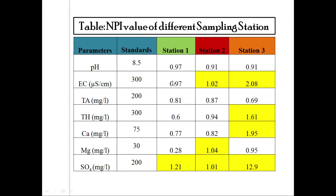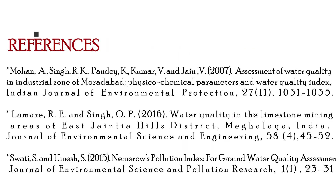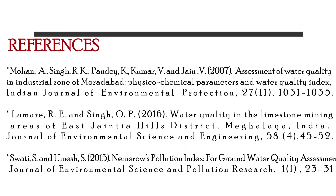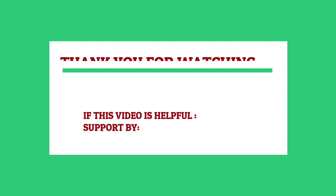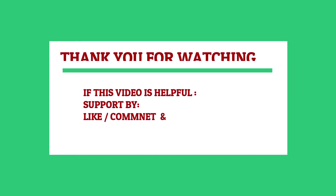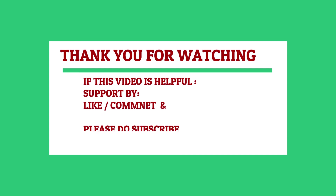With this we can conclude that the Numerous Pollution Index value helps us in identifying which parameters are responsible for polluting or deteriorating the water quality of any area studied. These are the references where you will find research papers where NPI has been used in water quality assessment. I hope this video has guided you in understanding what the Numerous Pollution Index is. Thank you so much and God bless.